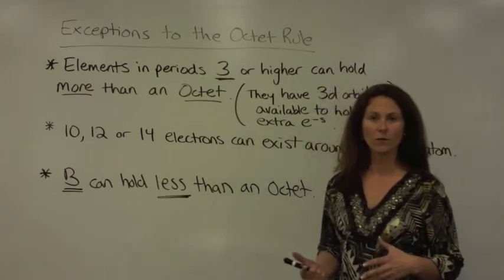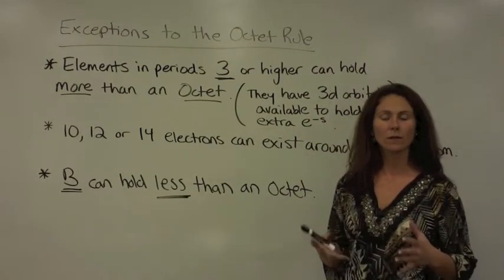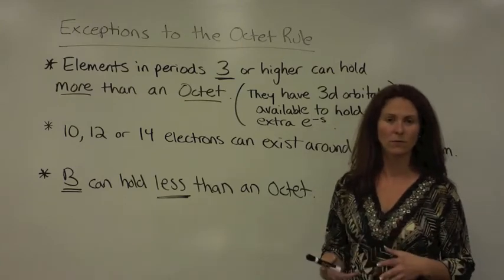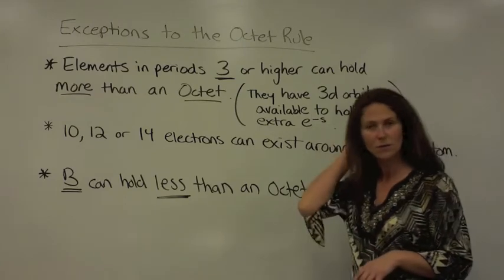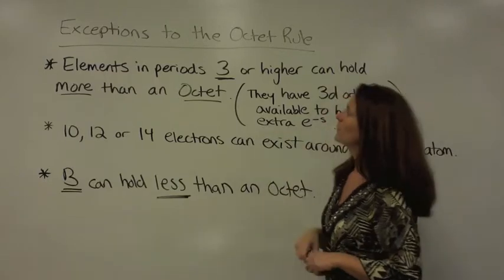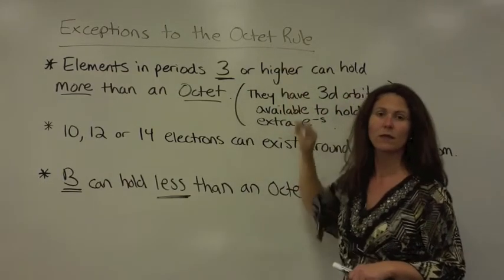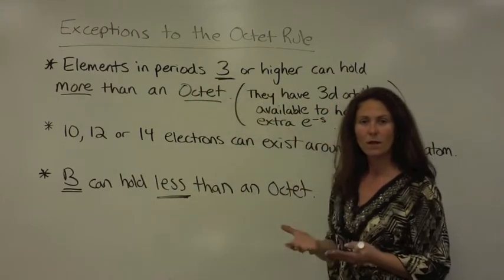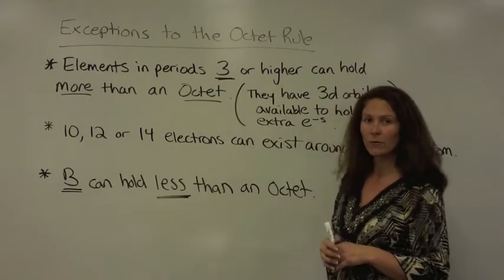Normally when we have covalent compounds formed, they're sharing electrons and overlapping orbitals in order to achieve an octet, eight valence electrons. There are exceptions to this general rule, though. There can be exceptions to the octet rule in cases that they might actually have more than an octet in their circle, in their boundary.